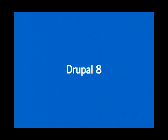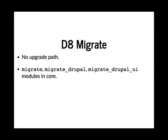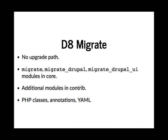In Drupal 8, things have changed. There is no upgrade path — you can't take a Drupal 7 site, put Drupal 8 on top, and run update.php. That no longer exists. The Migrate module is now in core, the Migrate D2D module has been renamed to migrate_drupal, and there's also a migrate_drupal_ui module. There are still additional contrib modules: migrate_tools, which provides some backported functionality from D7 and adds Drush commands, and migrate_plus, which extends things further. Rather than all the verbose PHP code in classes, it's now split — there are still PHP classes, but we also use annotations and YAML configurations.